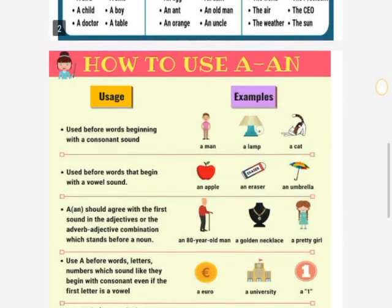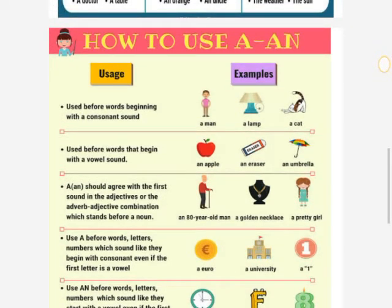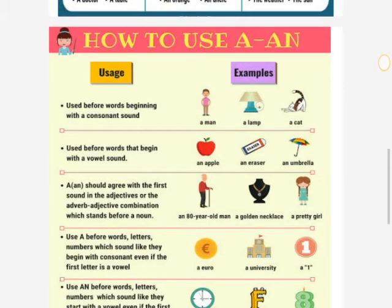Now let's see how to use a and an with some examples. A and an are used before words beginning with a consonant or vowel sound respectively. In English, A, E, I, O, U are vowels and the rest of the alphabets are consonants. For example: a man, a lamp, a cat — man, lamp, and cat start with a consonant sound, so we use the article a.